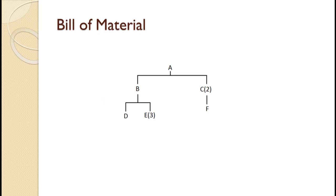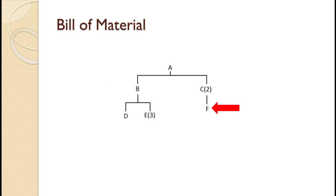Material Requirements Planning starts with a bill of materials, as shown on the screen. The bill of materials shown is for making an A item. Since this is the item we sell to customers, it is considered an independent demand item. An A is made up of one B and two C's. Each C is made up of an F. Since each A requires two C's and each C requires an F, each A requires two F's as well.